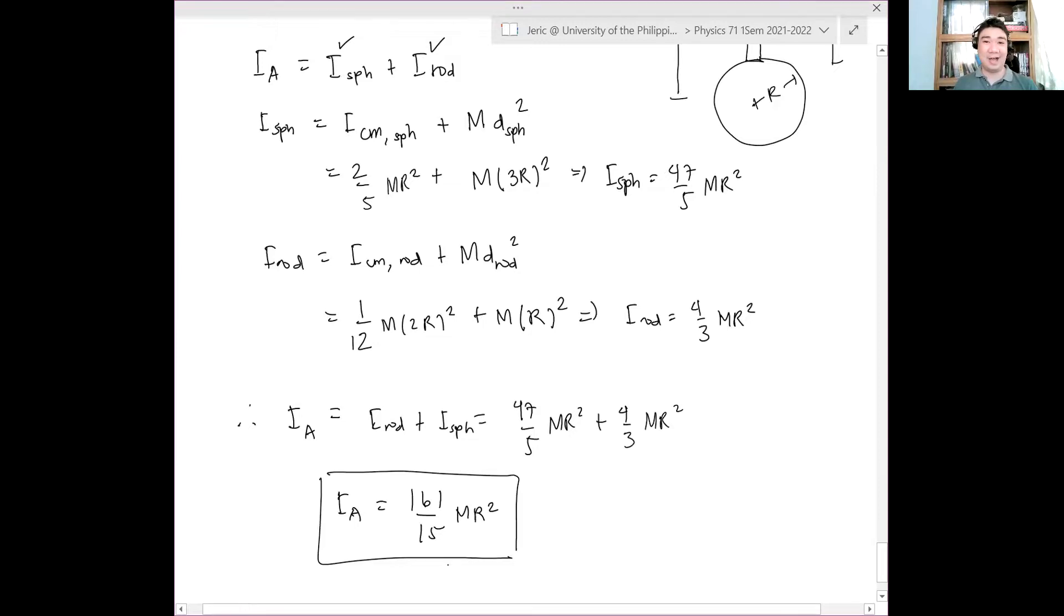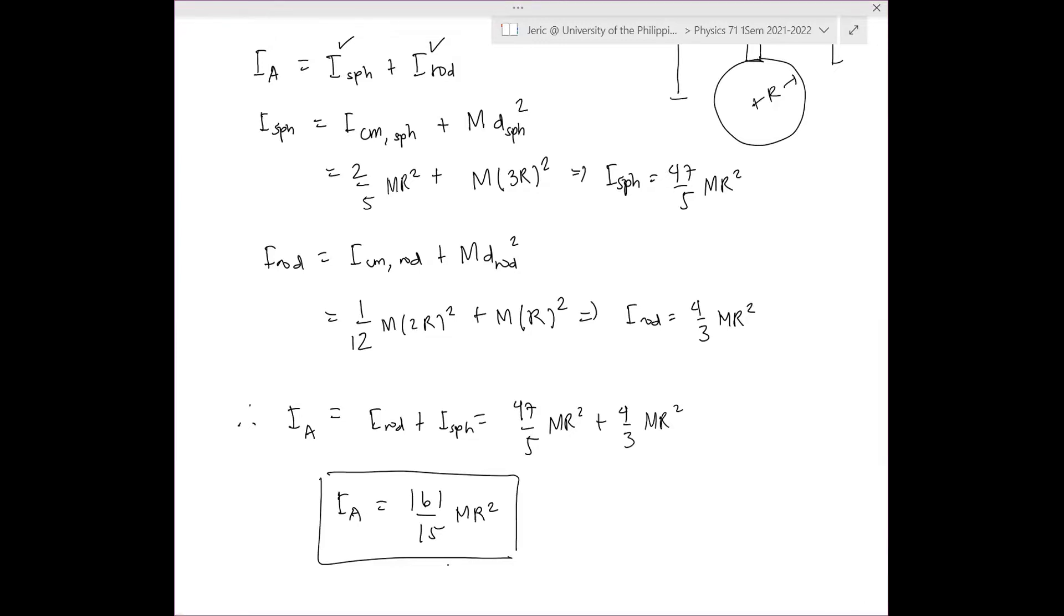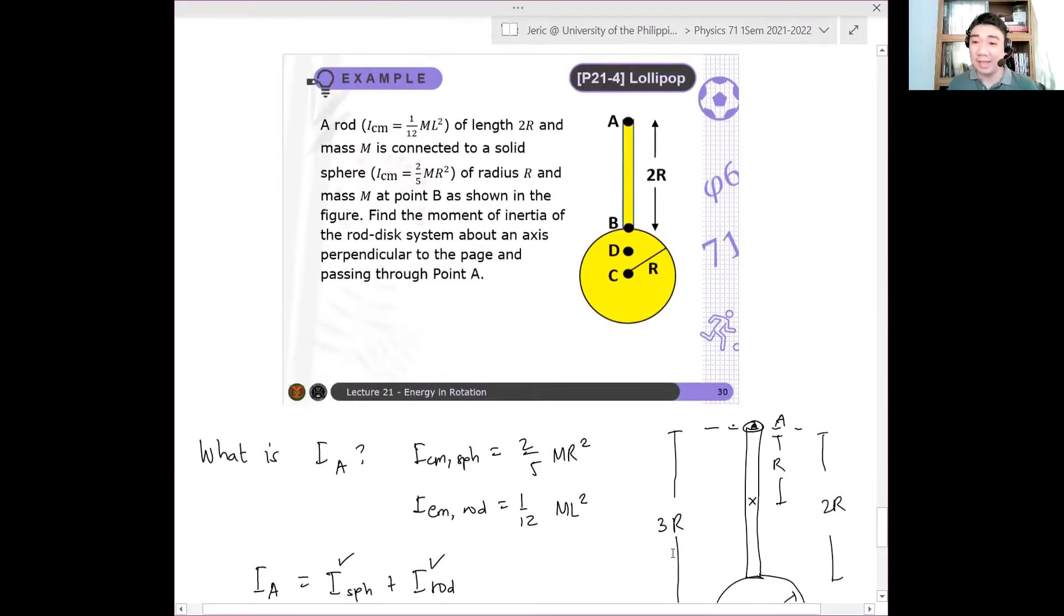About point A. Okay? Got it? Yes. Got it? Now, supposedly, we can also calculate at any given point. Let's say point B will have a different expression, point C will have a different expression. Okay? Exercise for you guys. That's your exercise. Find the moment of inertia for points B and C.